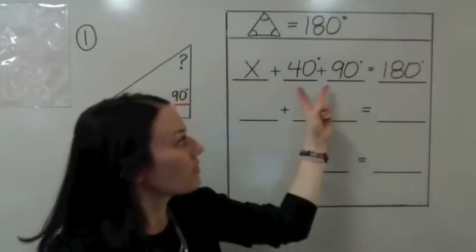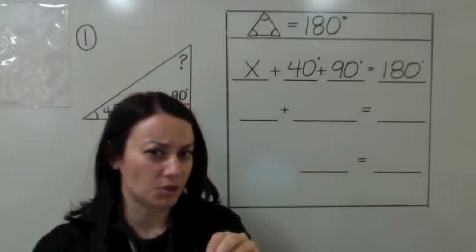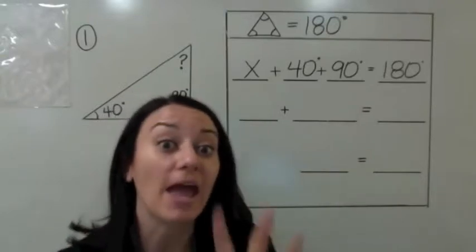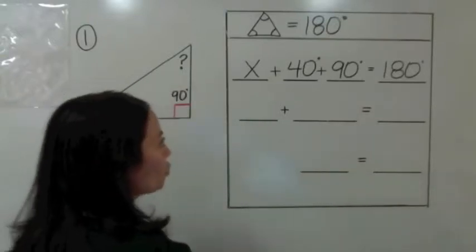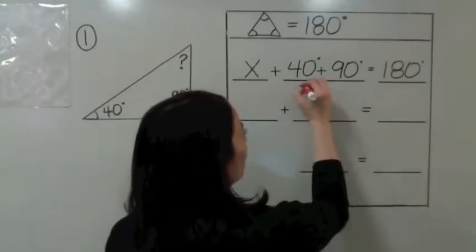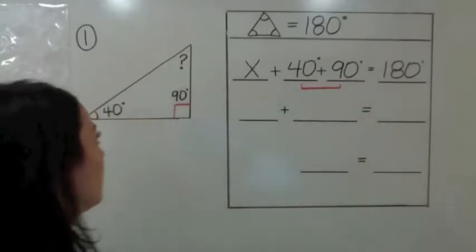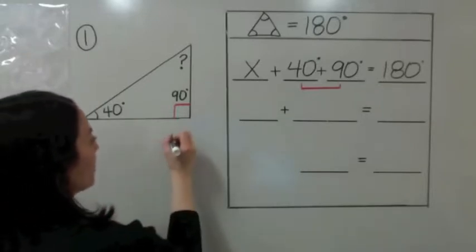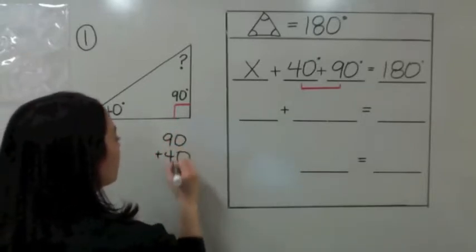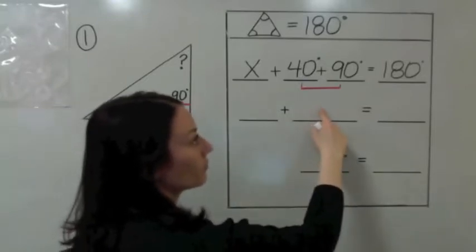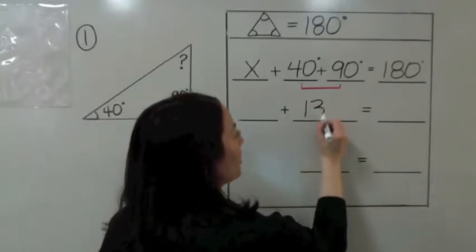Since you have these two known angles, you're supposed to add them first. We combine like terms by adding 40 plus 90 first — because we would add 90 plus 40. That's the first step. So what's 90 plus 40? It's 130 degrees.